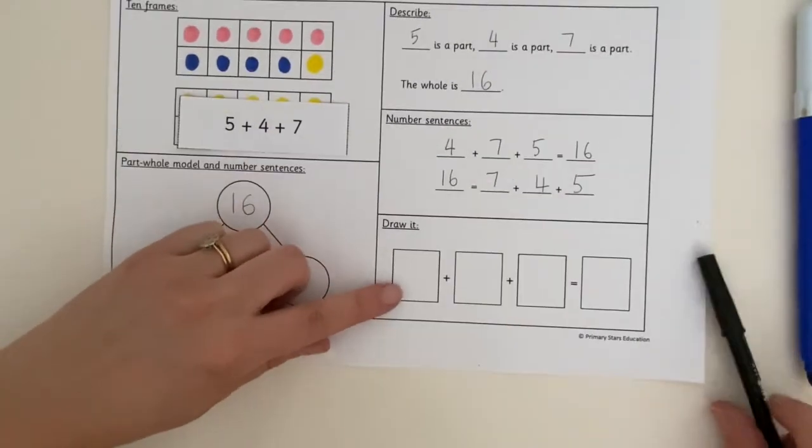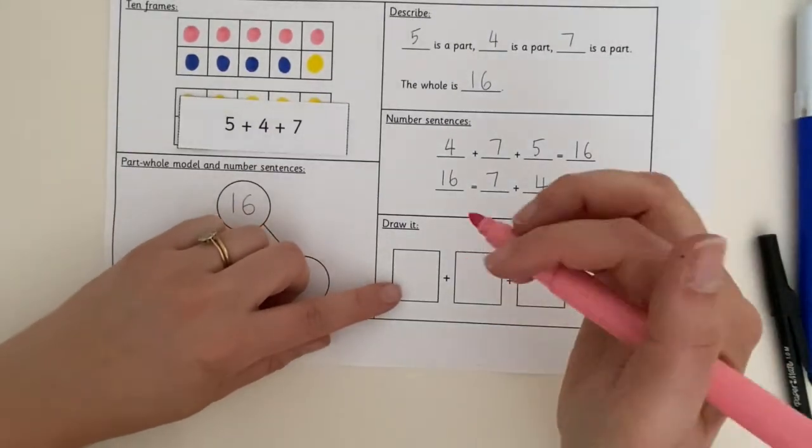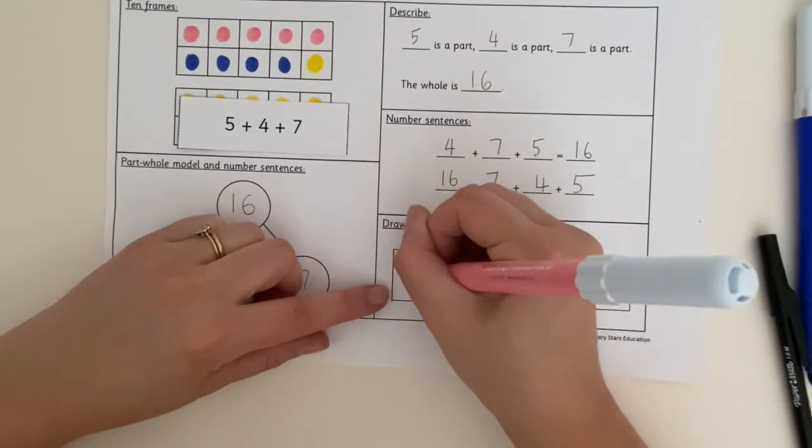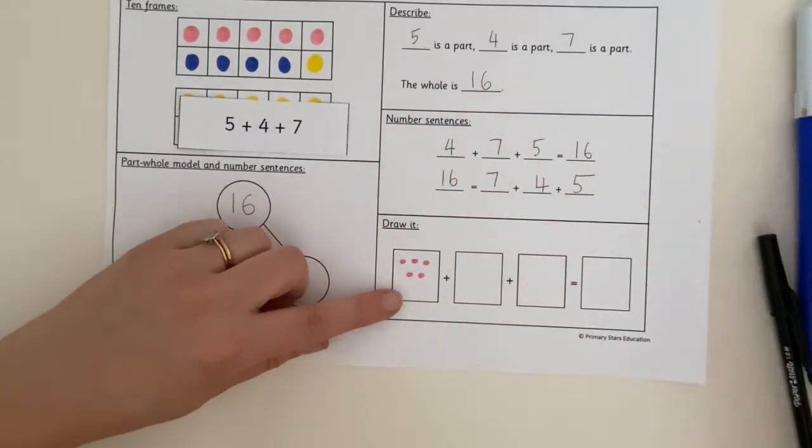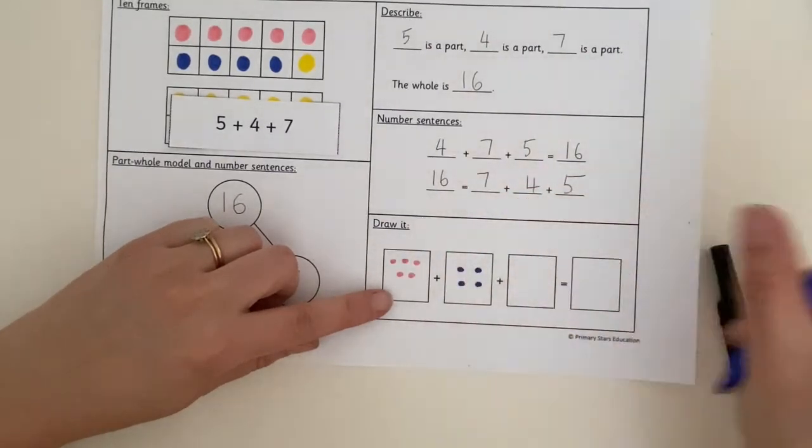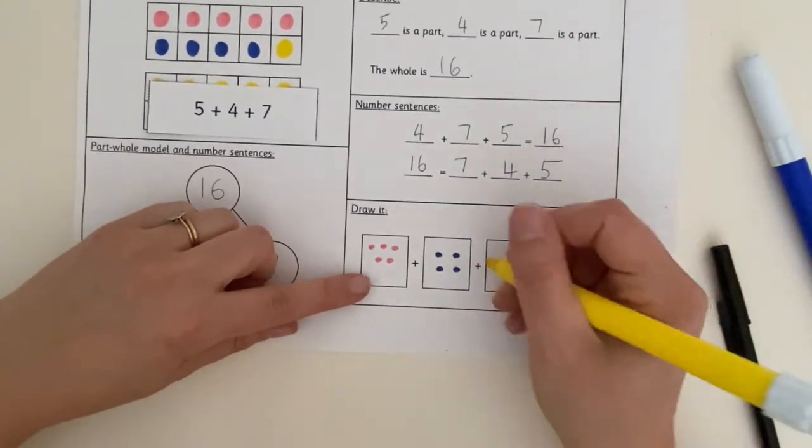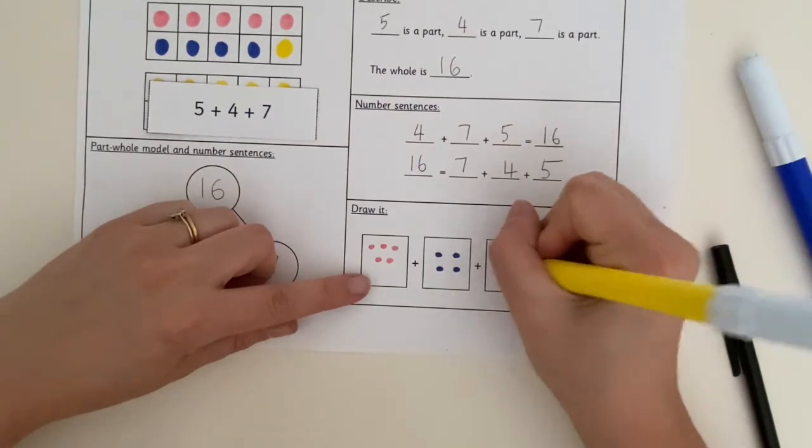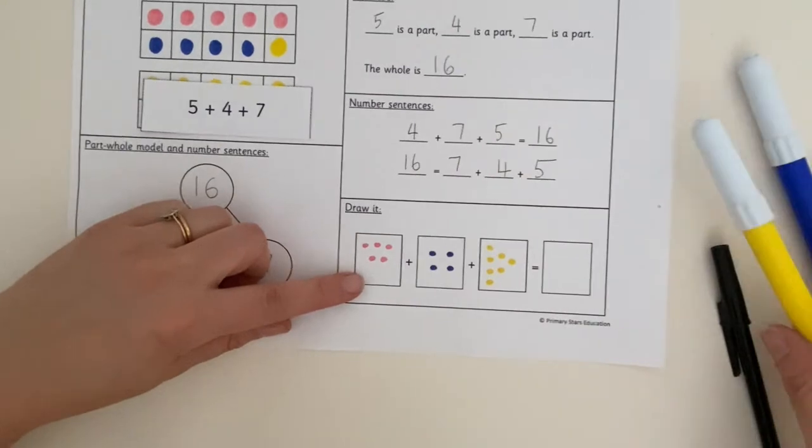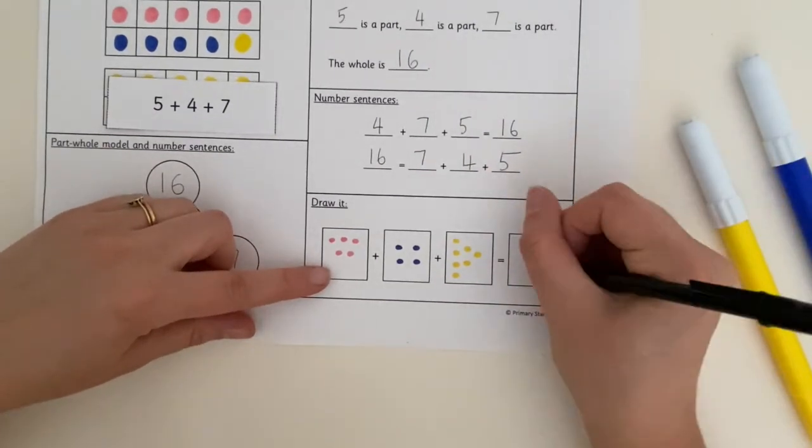Now we can draw it. One, two, three, four, five, add four. One, two, three, four. Now I'm going to do my seven. One, two, three, four, five, six, seven. And that equals 16 altogether.